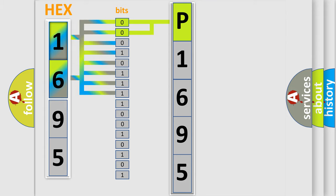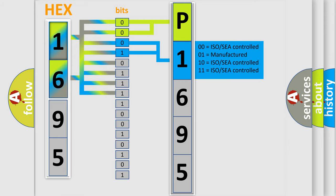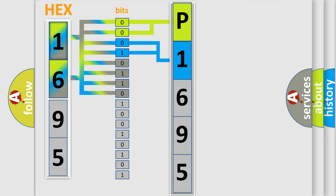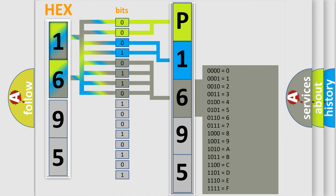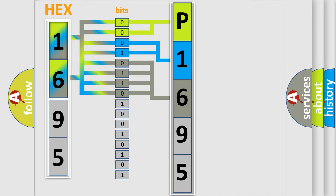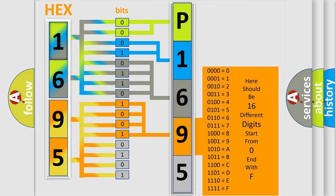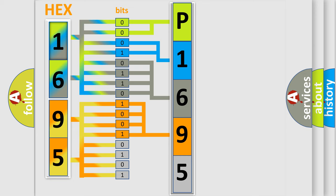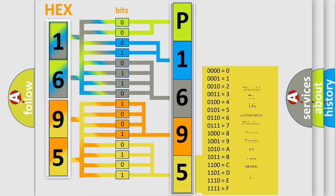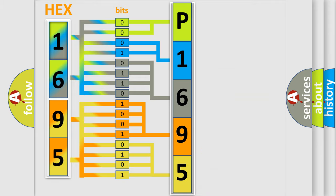The next two bits determine the second character. The last bits of the first byte define the third character of the code. The second byte is composed of a combination of eight bits. The first four bits determine the fourth character of the code, and the combination of the last four bits defines the fifth character. A single byte conceals 256 possible combinations.